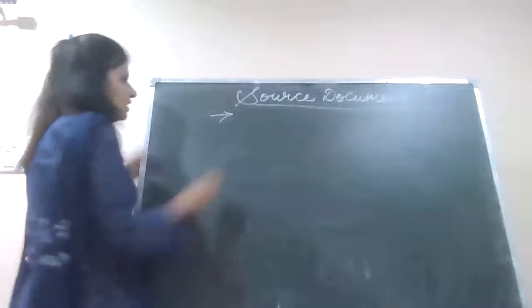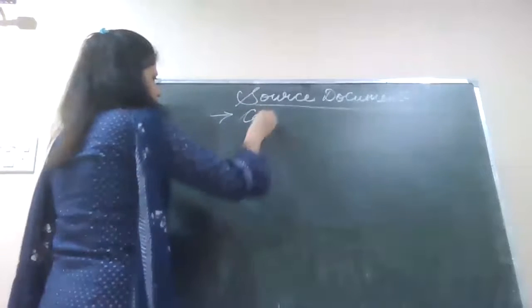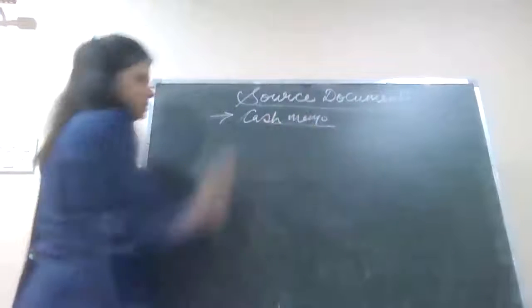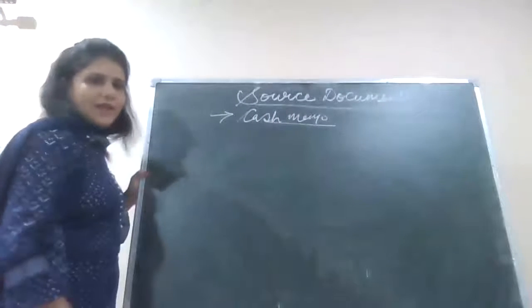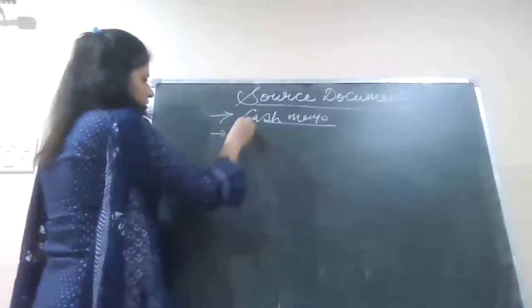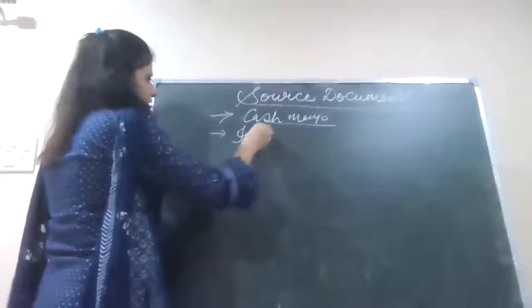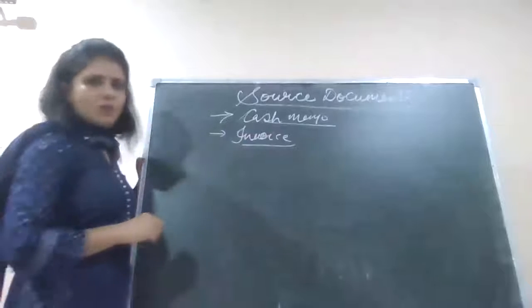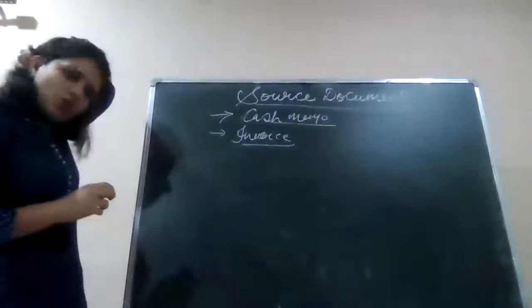Students, under source documents till now we have discussed cash memo. When we buy or sell goods on cash basis we get a bill which we call cash memo. But if we buy or sell on credit basis then we give or receive invoice. Invoices are of two types: inward invoice and outward invoice.